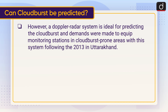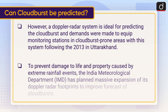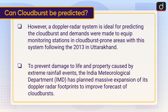Multiple weather radars can be used to give timely updates, but they are very expensive. However, a Doppler radar system is ideal for predicting cloudbursts, and demands were made to equip monitoring stations in cloudburst-prone areas with this system following the 2013 Uttarakhand disaster. The India Meteorological Department has since planned a massive expansion of its Doppler radar footprint to improve cloudburst forecasts.